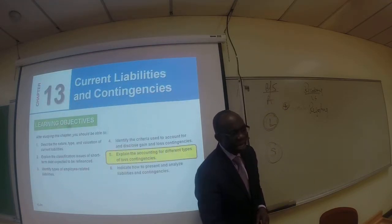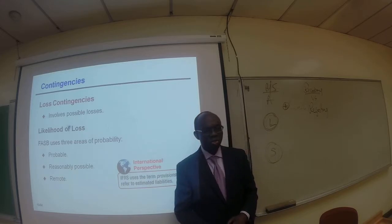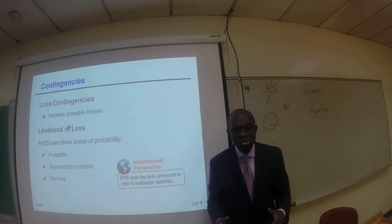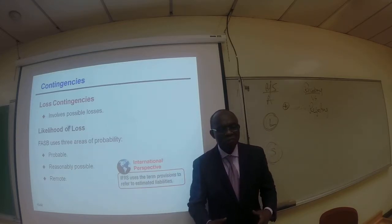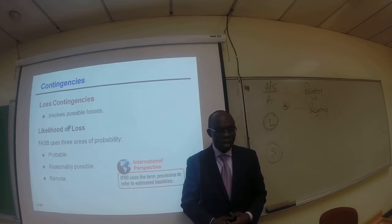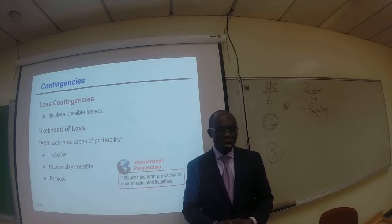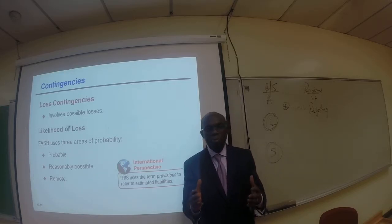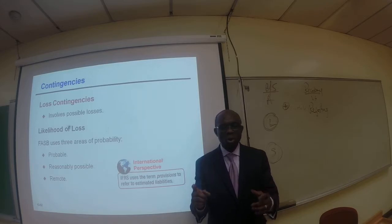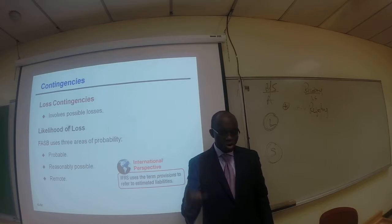Moving along, let's take a look at loss contingencies, which involve possible losses. Let's look at the likelihood of the loss. FASB uses three areas of probability: number one, probable; number two, reasonably possible; and number three, remote.